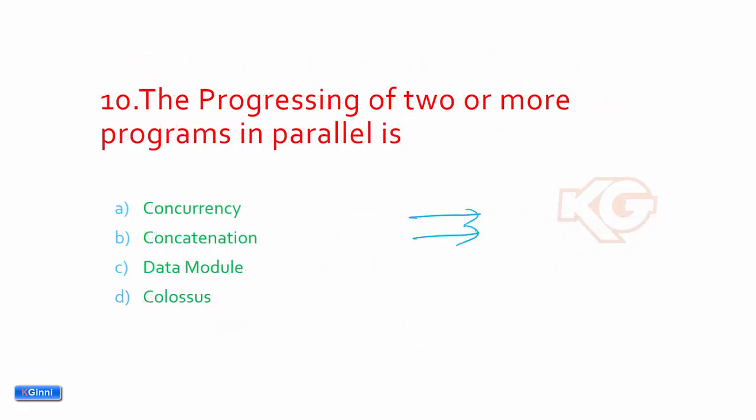The processing of two or more programs in parallel is? It's happening at the same time - program one, program two. So what is that called? The answer should be concurrency. It cannot be concatenation because concatenation means adding of two things together. Data module and color sys are also not part of this question.